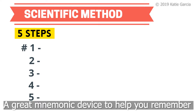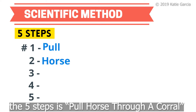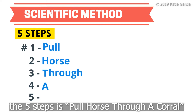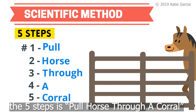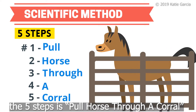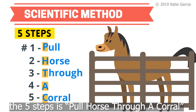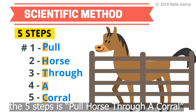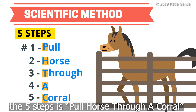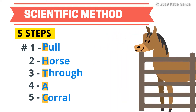A great mnemonic device to help you remember the five steps is 'Pull Horse Through A Corral.' Pull Horse Through A Corral — the P-H-T-A-C represents the five steps.